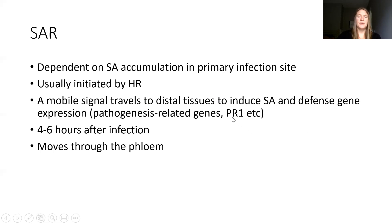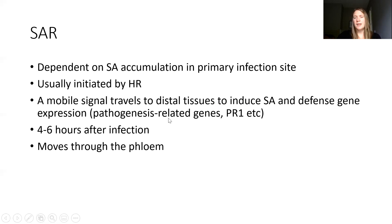These are called pathogenesis-related genes, or PR genes, and they're effective at producing resistance in many different types of plants, not just for SAR but in general. If we overexpress them, for example, we see pretty good disease resistance depending on the pathogen.